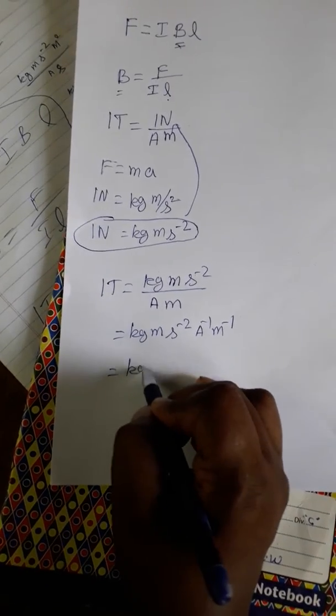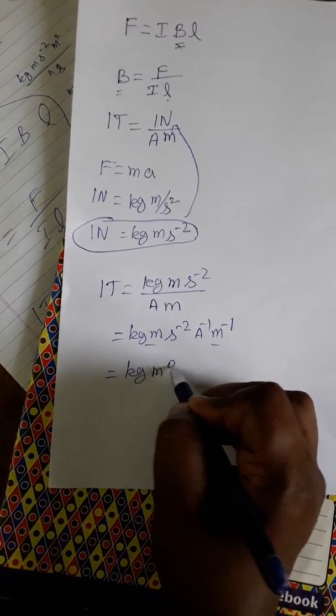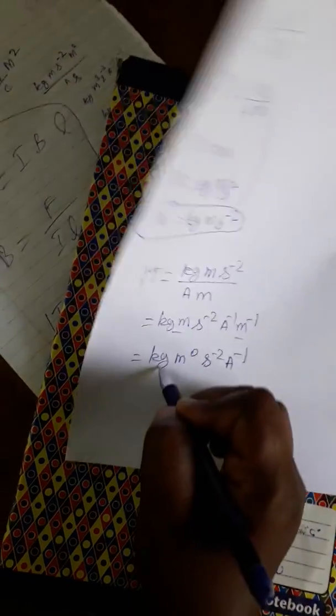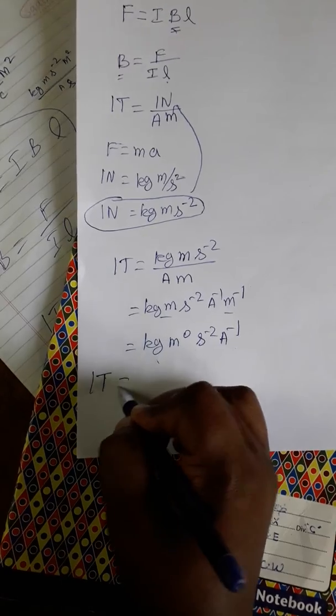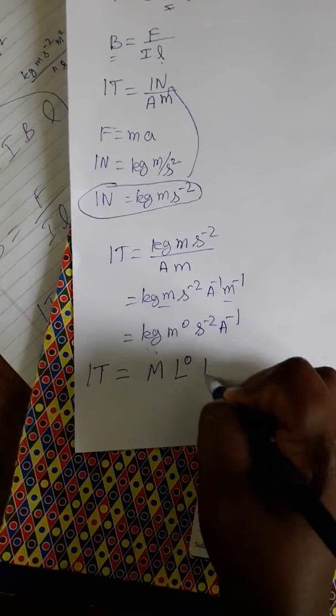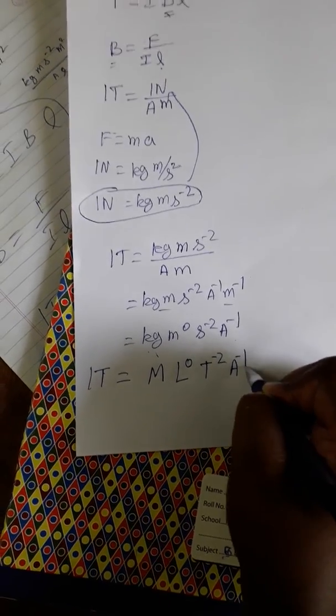So finally we will get kg meter, meter, meter will get as meter power zero, second minus two ampere inverse. Finally the SI dimensional formula for one Tesla is mass M, length L zero, time T power minus two ampere minus one.